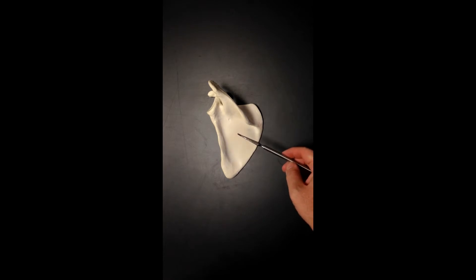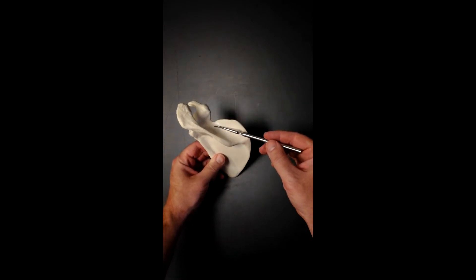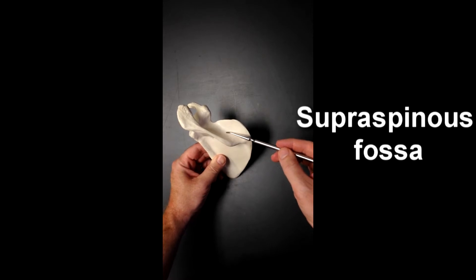A couple of important structures on either side of the spine of the scapula. Down here, we have the infraspinous fossa. This indented area inferior to the spine of the scapula is the infraspinous fossa. And then, this area up here, superior to the spine of the scapula, would be the supraspinous fossa.